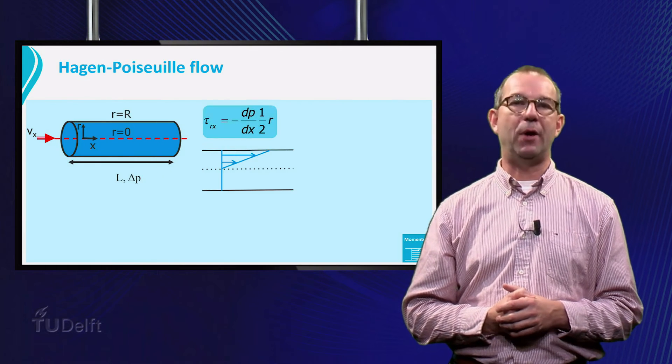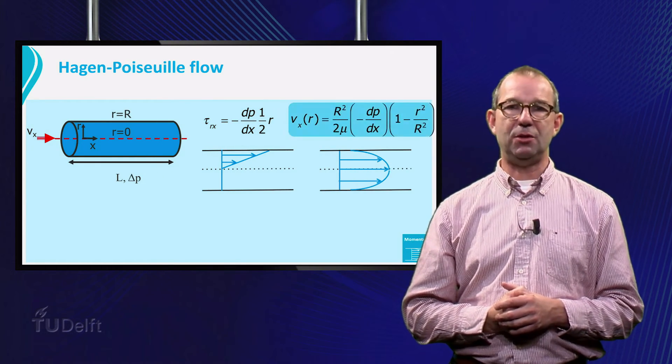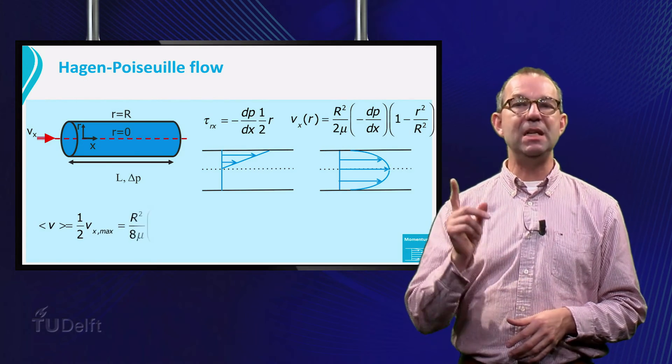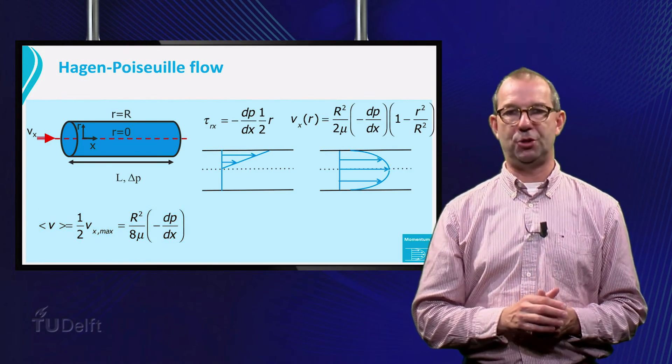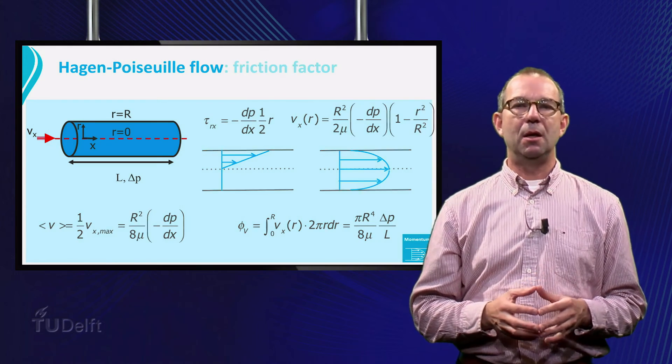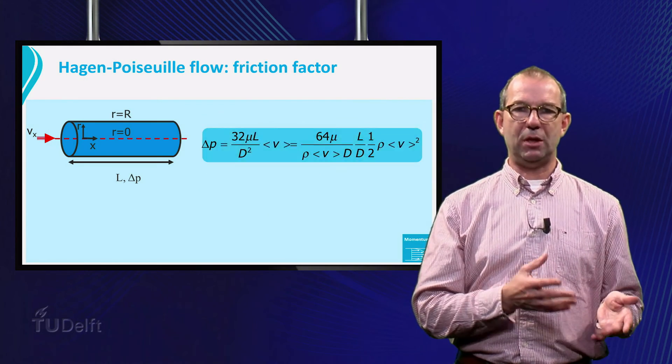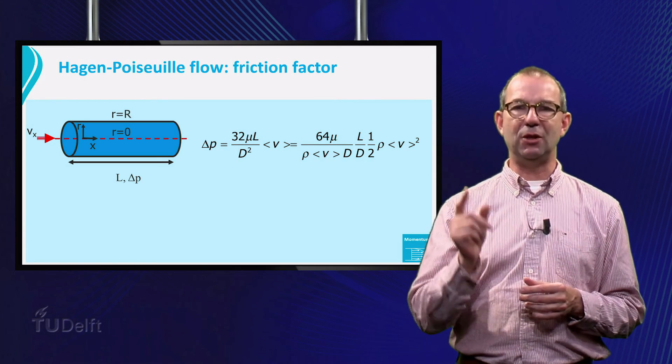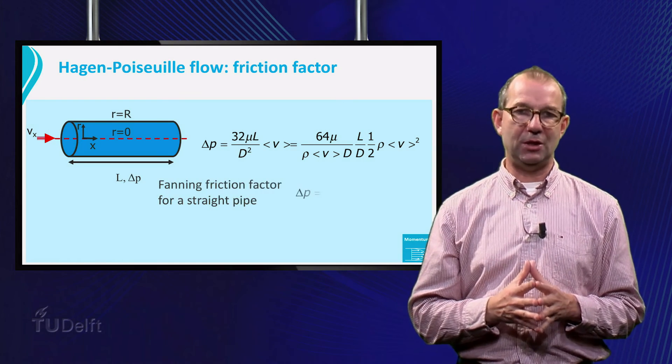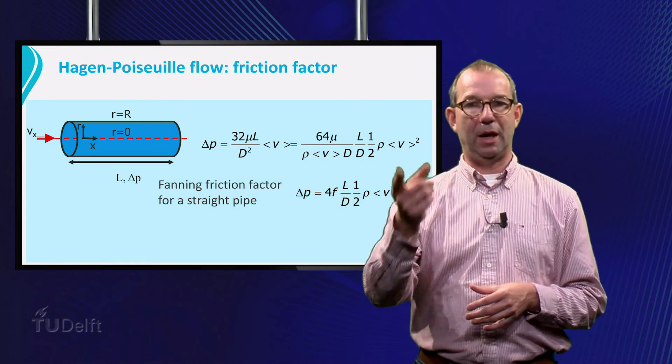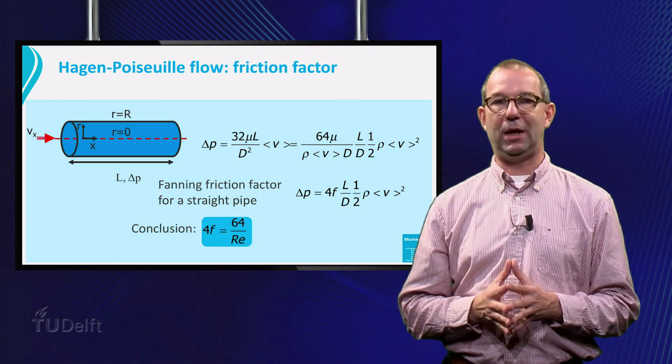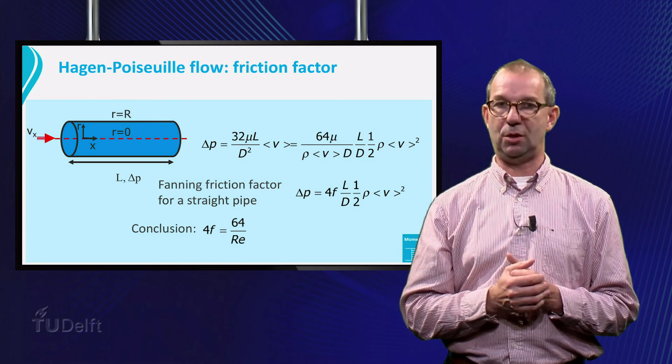In this sheet we have summarized our findings. A straight shear stress profile and a parabolic velocity profile. A few characteristics. The mean velocity is half of the maximum velocity. The volume flow rate is related to the pressure drop as given on the sheet. Finally, now that we have the average velocity, we can write this as a relation between delta p and the half rho v squared. This is the form we found for the Fanning friction factor for flow in a straight pipe. Delta p is 4f L over d half rho v squared. Thus we can conclude that indeed the Fanning friction factor for this case is exactly given by 4f is 64 over Reynolds.